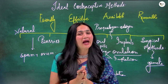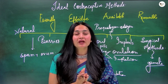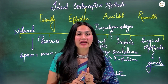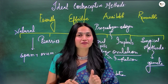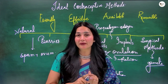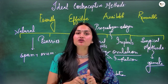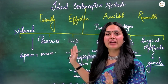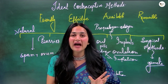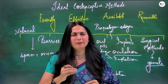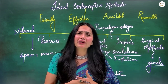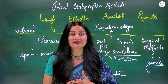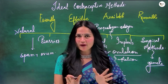In the surgical method, we cut the tubes to prevent sperm and egg from meeting. In females, the fallopian tube is cut — this is called tubectomy. In males, the vas deferens is cut — this is called vasectomy. Remember that when it comes to the surgical method, reversibility decreases. Natural methods, IUDs, oral contraceptives, and implants are all reversible, but with surgery, conceiving again becomes difficult.